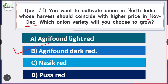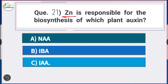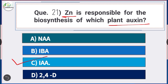Question number 21: Sink is responsible for the biosynthesis of which plant auxin? Answer is option C — IAA. Sink is responsible for the biosynthesis of IAA.